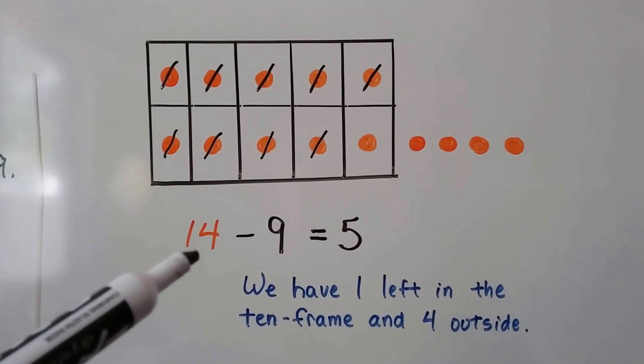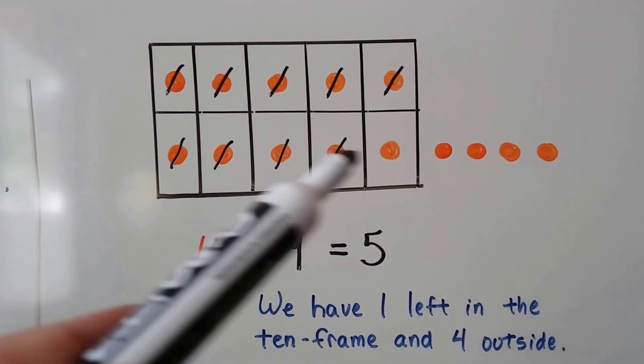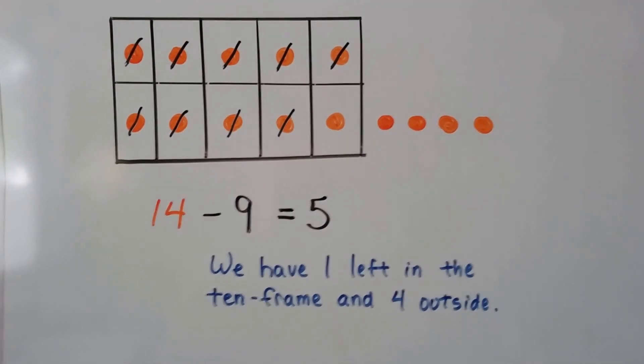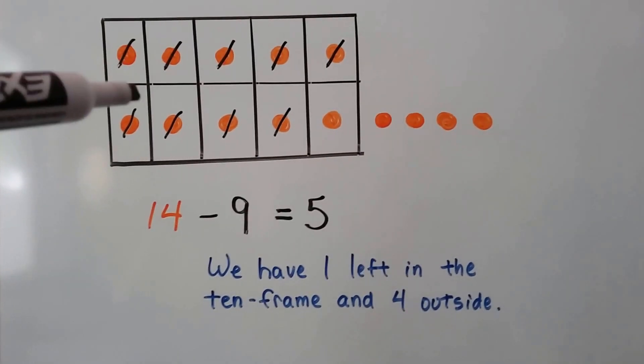We have 14 for our minuend, so we have 14 orange dots. The 10 frame is full with 4 on the outside. That's 14. We cross off 9.